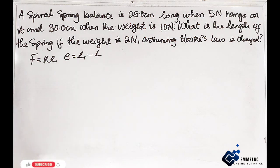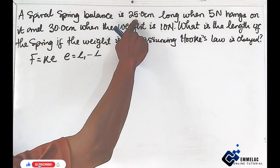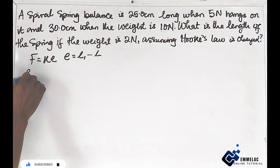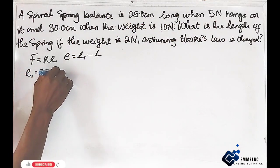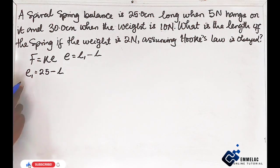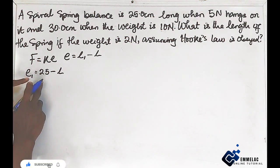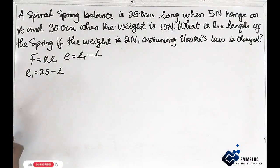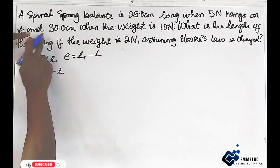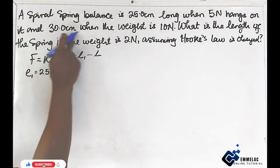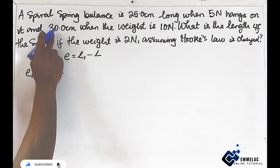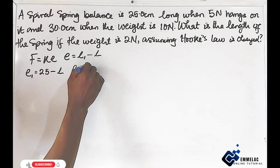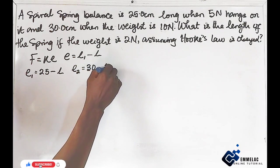So let us look at this: the length is 25 centimeters when 5 Newton is hung, which means the extension for the first one equals 25 minus the original length. The second part says 30 centimeters when a weight of 10 Newton is hung, so the extension of the second one will be 30 minus the original length.